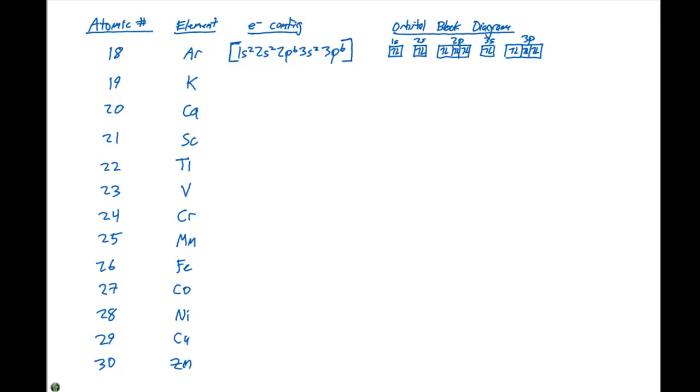In the previous video we looked at the electron configurations and orbital block diagrams for elements number 1 through 18 and we listed them. Now we're going to go on to do elements 19 through 30.